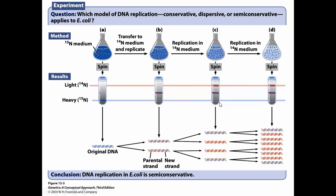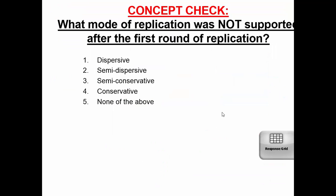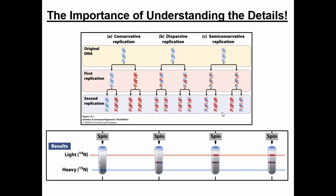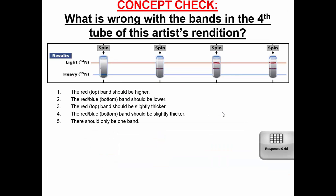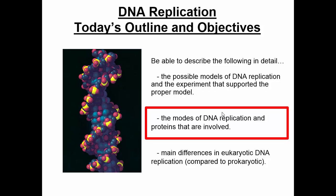Here's a clicker question you should be able to answer: which mode of replication was not supported after the first round of replication? Think about that. It's important to understand the details — you should be able to fill in this slide and relate the top picture to the bottom picture, understanding exactly which possible mode of DNA replication was disproved at each point of the experiment. The next part of the lecture will discuss the modes of DNA replication. I'm going to stop here and post a second part of the lecture that will cover this next section.